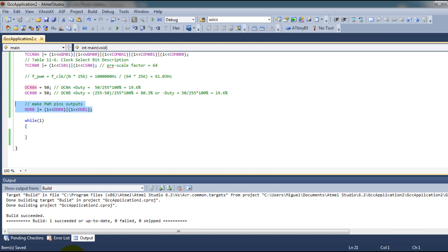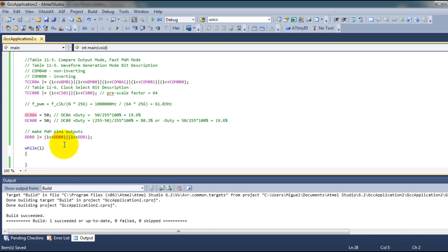And one thing you can do if you don't have an oscilloscope is you can connect an LED and just change these numbers, and you're gonna be able to see how the LED's light changes its brightness.